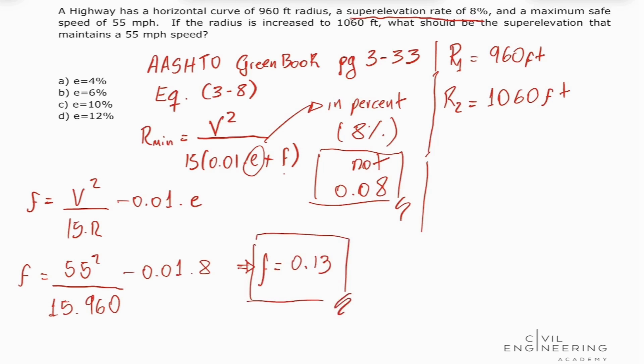Now we can go back to this equation and we can solve for the new superelevation. So we have that our R2 is going to equal 55 squared divided by 15 times 0.01 times our new superelevation, I'm going to call this e sub 2, plus our friction factor.